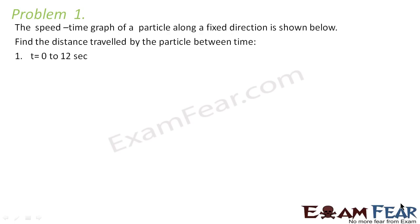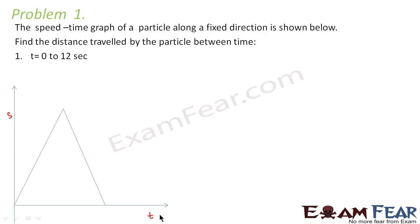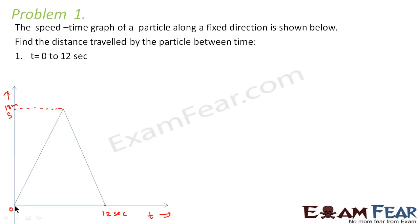The speed-time graph of a particle along a fixed direction is shown below. Find the distance travelled by the particle between time t equal to 0 to 12 seconds. This shows the speed-time graph of a particle — this axis is speed and this axis is time. The graph tells us that the distance travelled till a certain point is 18 meters and the time at that point is 12 seconds. Time at the start is 0. So what we have to calculate is the distance travelled from 0 to 12 seconds.